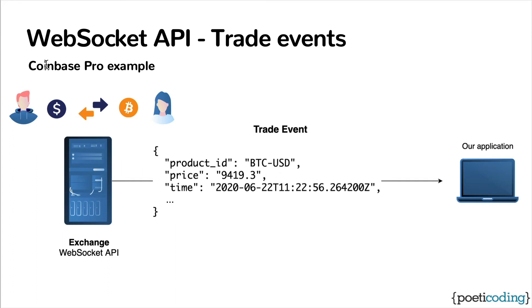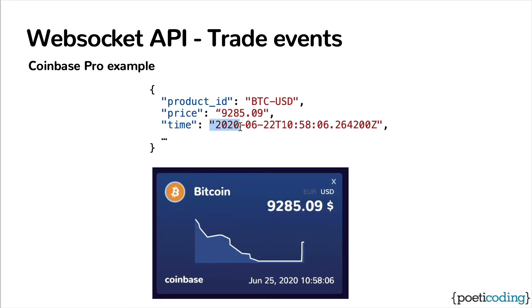So for example, on Coinbase Pro, a trade happening for the Bitcoin USD crypto product looks like this. When we receive a trade message, we know that at this time one Bitcoin is traded at — in this case — $9,285.09. In this JSON message that represents a trade, we have everything we need for our dashboard: the price, the time, and the currency pair.